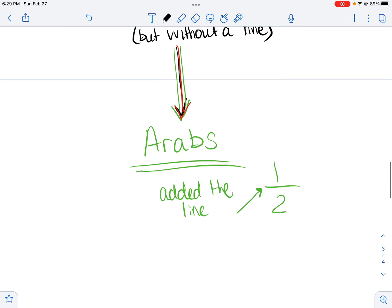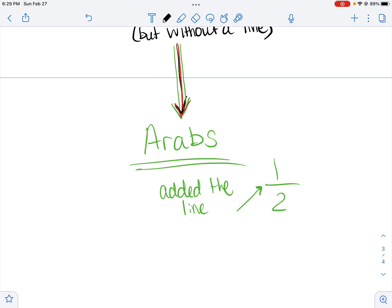And then fast forward a little farther, and it was the Arabs that decided to add that line in between them and write them more kind of like the fractions that we see today. So that would be one half.